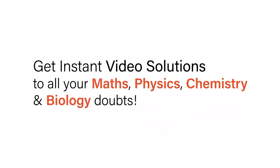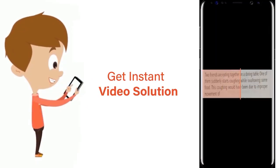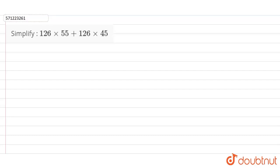With Doubtnet, get instant video solutions to all your maths, physics, chemistry, and biology doubts. Just click the image of the question, crop the question, and get instant video solution. Download Doubtnet app today. Hi students, the question is: simplify 126 × 55 + 126 × 45.